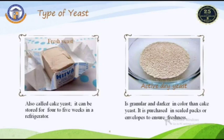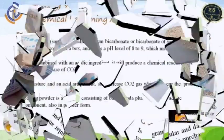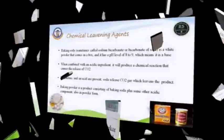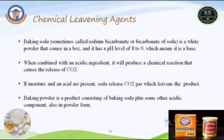The second type is active dry yeast, shown in the second picture. This type of yeast is called granular yeast. It is approximately 99 percent dry yeast and can be purchased as a leavening agent in sealed packets.